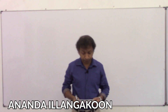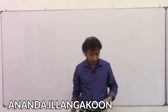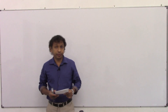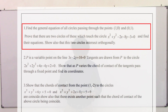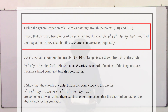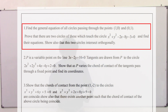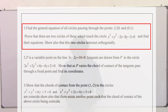Question number 1. Find the general equation of all circles passing through the points (1,0) and (0,1). Among these, there are two circles which touch the circle x²+y²-2x-8y-3=0. Find their equations. Show also that these two circles intersect orthogonally.